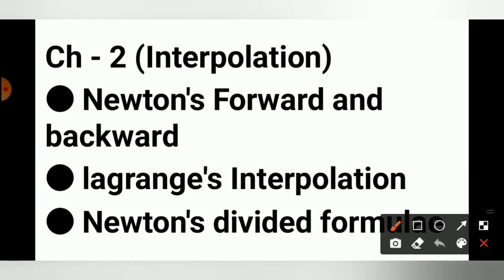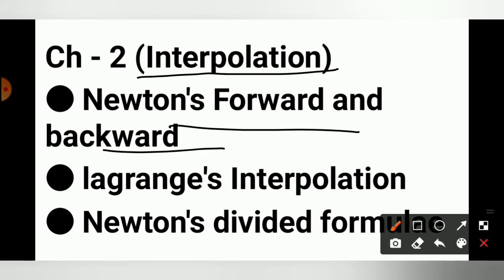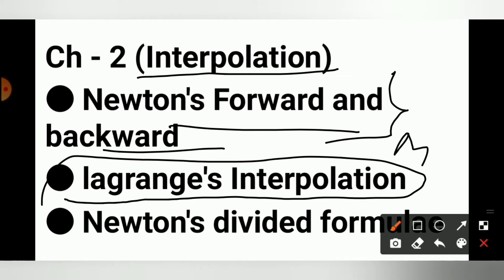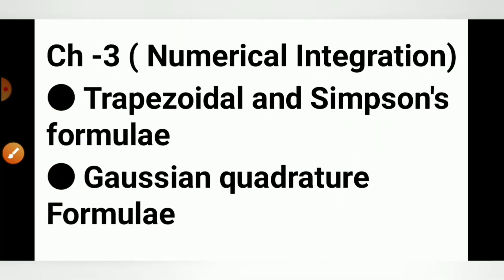Chapter number 2 की बात करें — Interpolation, जिसमें कई सारी Interpolation including है: Newton Forward, Backward, इसके अलावा Gauss Forward, Backward वो भी है, Stirling Formula है। लेकिन हमें prepare सबसे पहले करना है Newton Forward and Backward। इसके आगे लागराज Interpolation — सबसे most IMP topic — लागराज Interpolation and last में है Newton's Divided Difference formula। तो ये तीन Interpolation आपको prepare करना है।